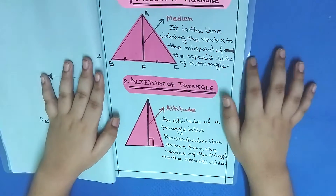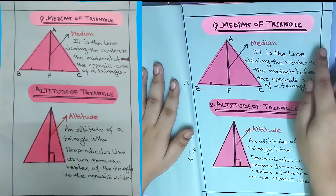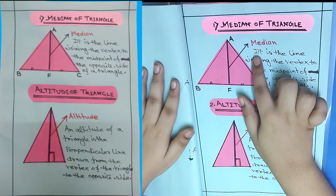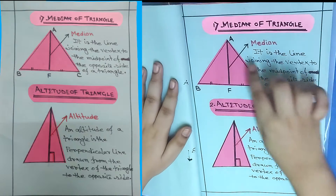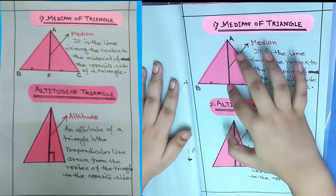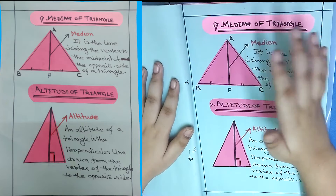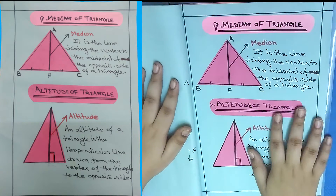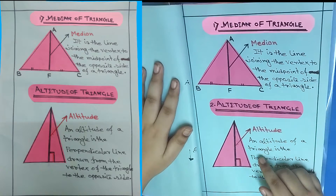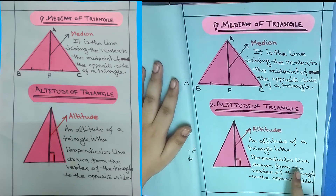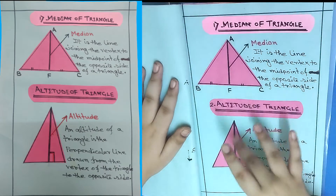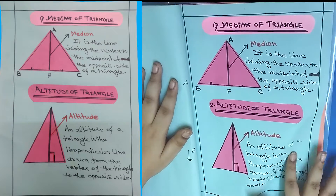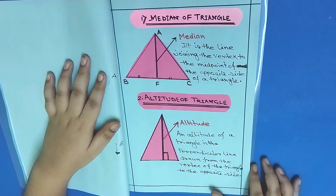Median of a triangle — the median is the line joining the vertex to the midpoint of the opposite side of a triangle. See — A and S, this is the median. Next up, the altitude of a triangle — an altitude is the perpendicular line drawn from the vertex of the triangle to the opposite side. See, this is the altitude.